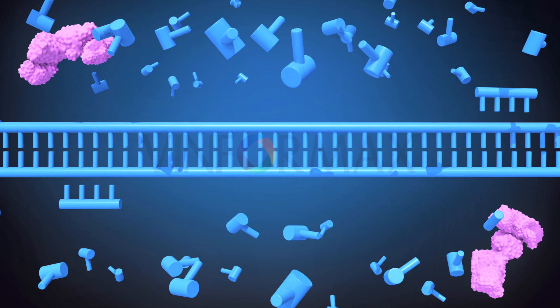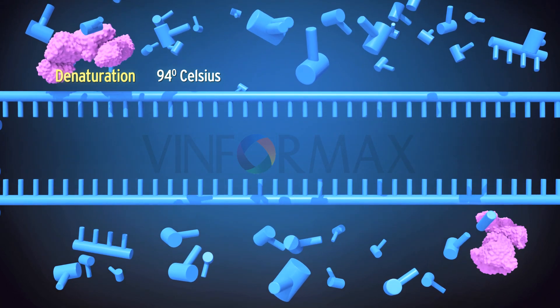There are three steps in each PCR cycle: denaturation, annealing, and extension. Denaturation: when the DNA is heated to about 94 degrees Celsius, the double-stranded DNA is separated into two strands.